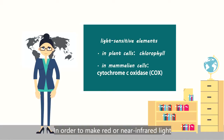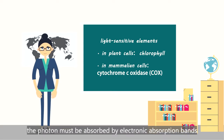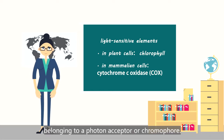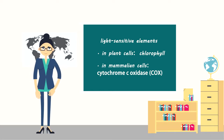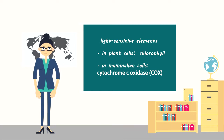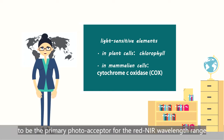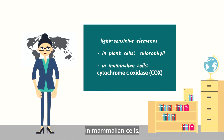In order for red or near-infrared light to have an effect on a biological system, the photon must be absorbed by electronic absorption bands belonging to a photon acceptor or chromophore. Similar to the chlorophyll within plant cells, cytochrome C oxidase has been proposed to be the primary photo acceptor for the red to near-infrared wavelength range in mammalian cells.